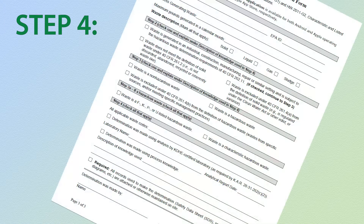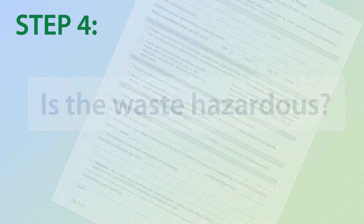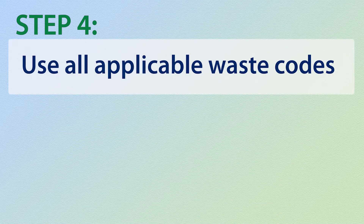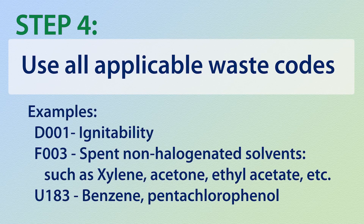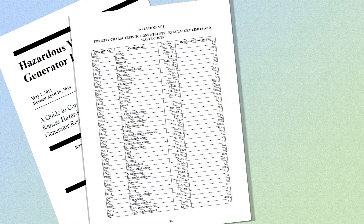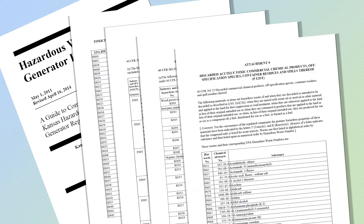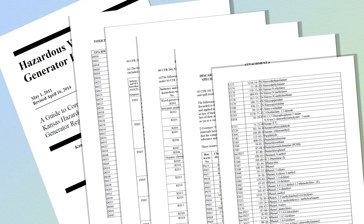Finally, step four involves preparing the document which clearly states whether or not the waste is hazardous. If it is hazardous, it is a good idea to also list the applicable waste codes, such as D001 for ignitability, F003, U183, for example. Waste codes are explained in the technical guidance just mentioned and can be found in the back of the generator handbook. This is a very important final step in the hazardous waste determination process.